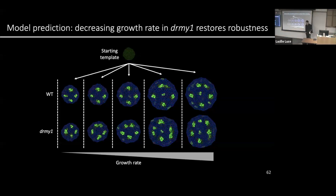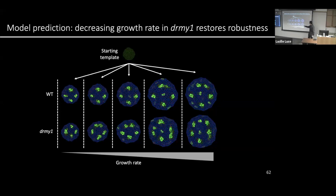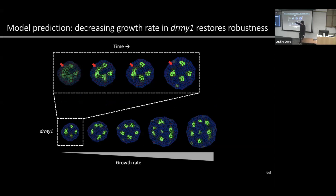An interesting prediction from the model is that changing growth rate can affect the final patterning outcome. Going from the same starting template, if you increase growth rate, you increase variability in the final pattern and disrupt robustness even in wild-type, so additional auxin maxima form. If you reduce growth rate, even the dreamy1 mutant forms four auxin maxima robustly in the simulation. Looking more closely, initially there is high auxin noise in these two cells, and over time they try to form an auxin maxima but cannot because the bud grows too slowly, and they get absorbed by the nearby auxin maxima, so in the end there are four.